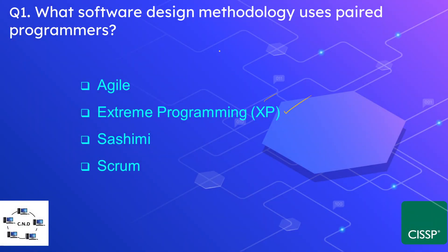Question number 1: What software design methodology uses paired programmers? The options are agile, extreme programming, sashimi, and scrum. The correct option is extreme programming, which uses paired programmers.